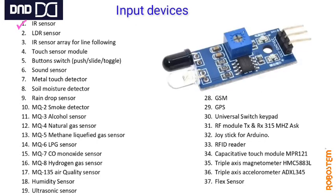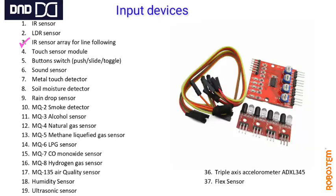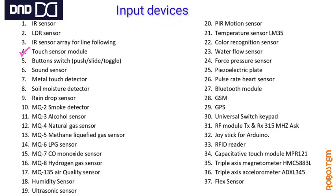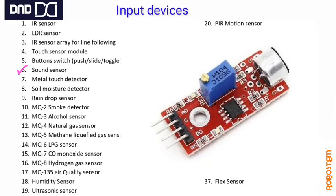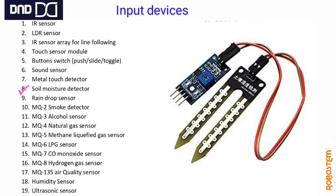This is the list we have in our ATL lab — there are even more devices available. First is the IR sensor, also called a proximity switch — it senses distance. LDR sensor senses light or luminosity. This is an IR array used for line follower robots. This is a touch sensor module — it senses human touch. These are switch buttons or press buttons we see in most toys. Sound sensor detects sound and can be used in many applications.